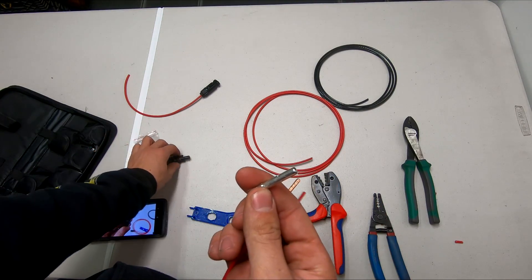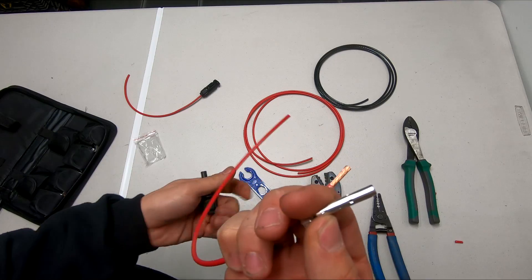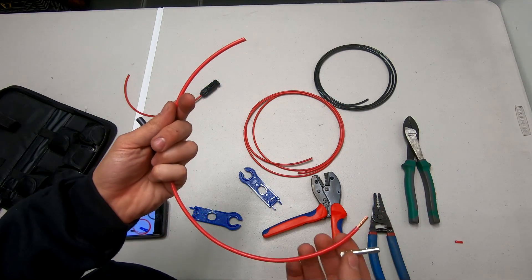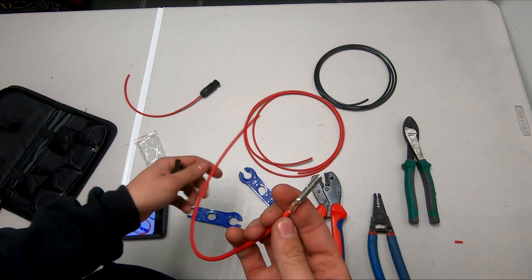With the other end, so this would be the end going to your solar charge controller, you're going to put a female ferrule with a male connector and this output would be what would go to your charge controller or batteries however you want to set it up.